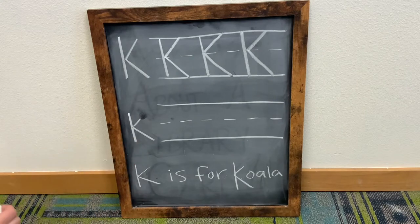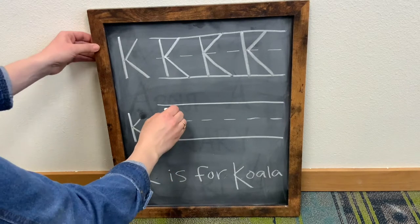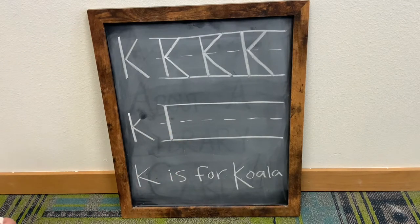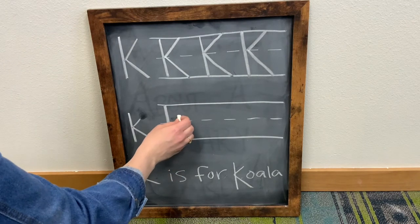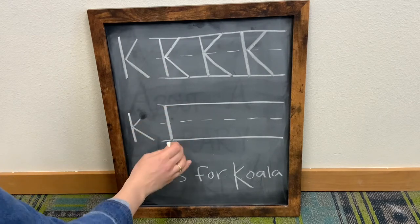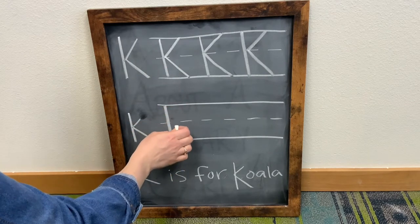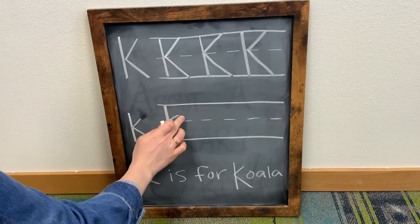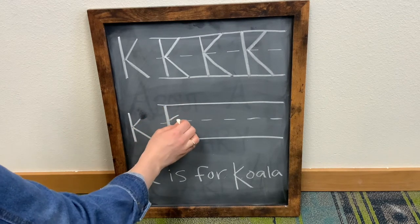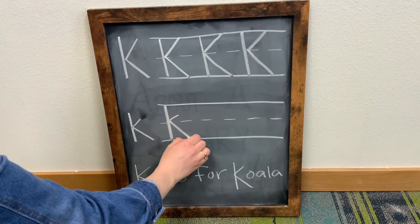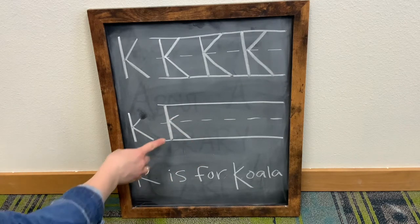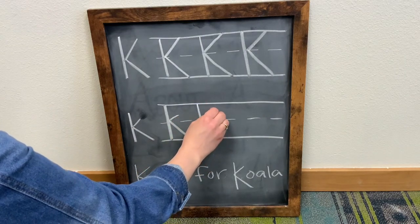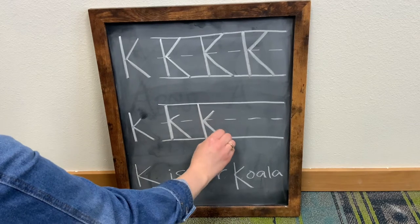For a lowercase letter K, you're going to make this vertical line. And we're gonna do the same as we did for the uppercase, you're just gonna do smaller ones. So we're not gonna touch this line, we're gonna kind of go right above the dotted line and then down below. So it just looks like a smaller version of this. One, two, three.